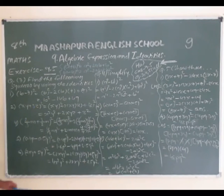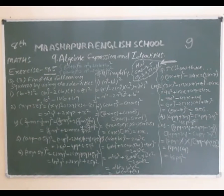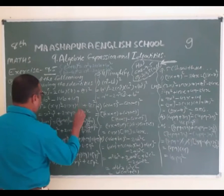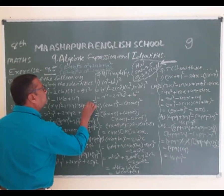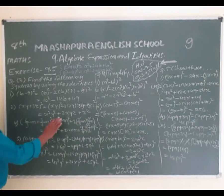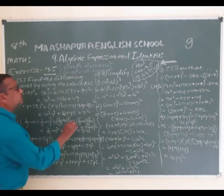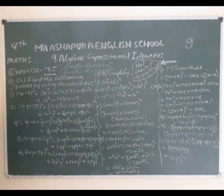(xy + 3z)² is like (a + b)² = a² + 2ab + b². So: first term squared = (xy)² = x²y², plus 2 × xy × 3z = 6xyz, plus (3z)² = 9z². Finally we get x²y² + 6xyz + 9z².